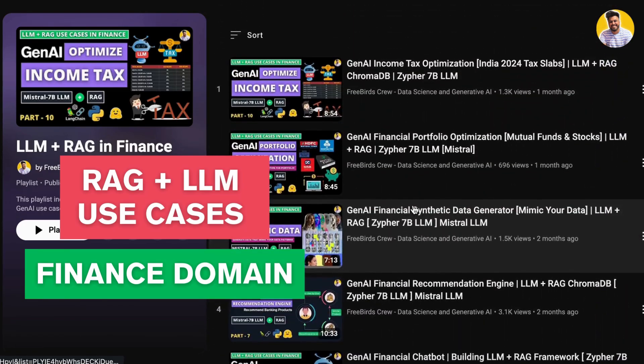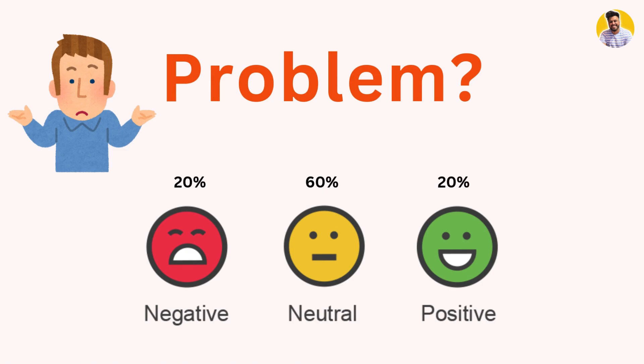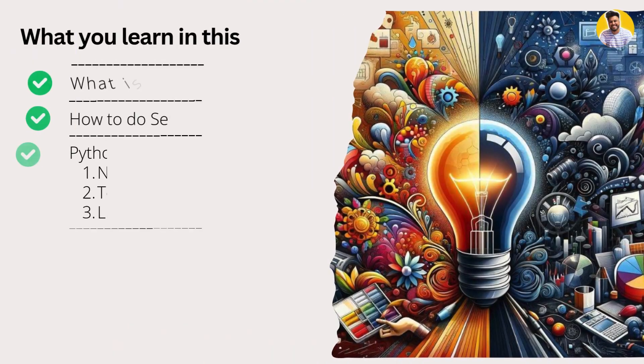So the problem is whenever I am doing sentiment analysis, it always gives more proportion to the neutral sentiment rather than the positive or negative sentiment. This happens due to the limited words and jargons present in libraries like NLTK, TextBlob, or large language models.